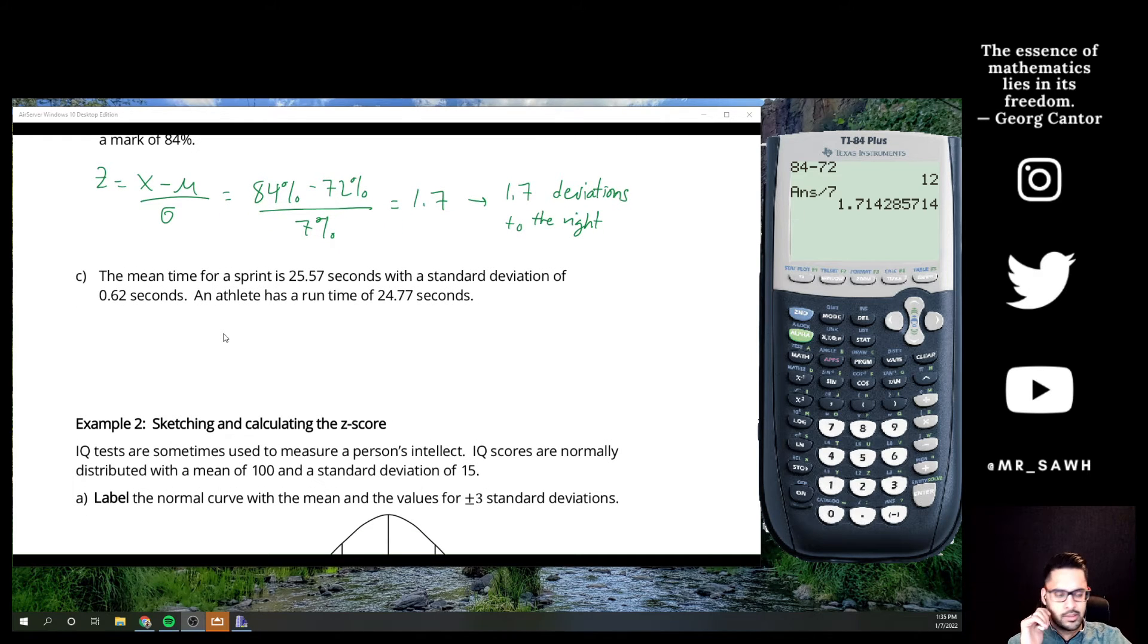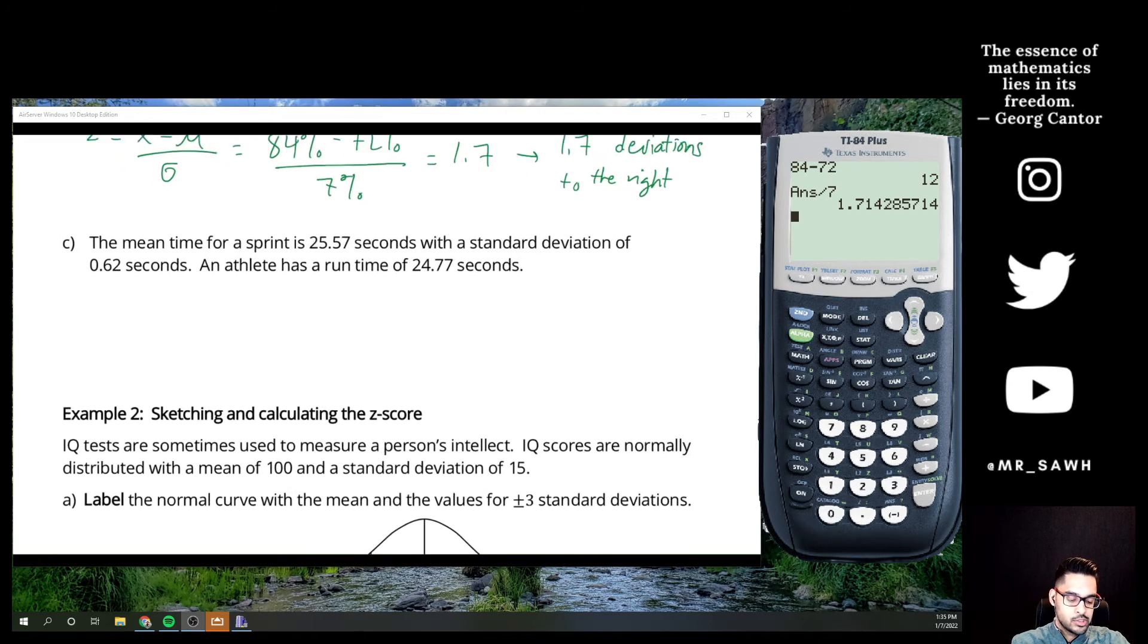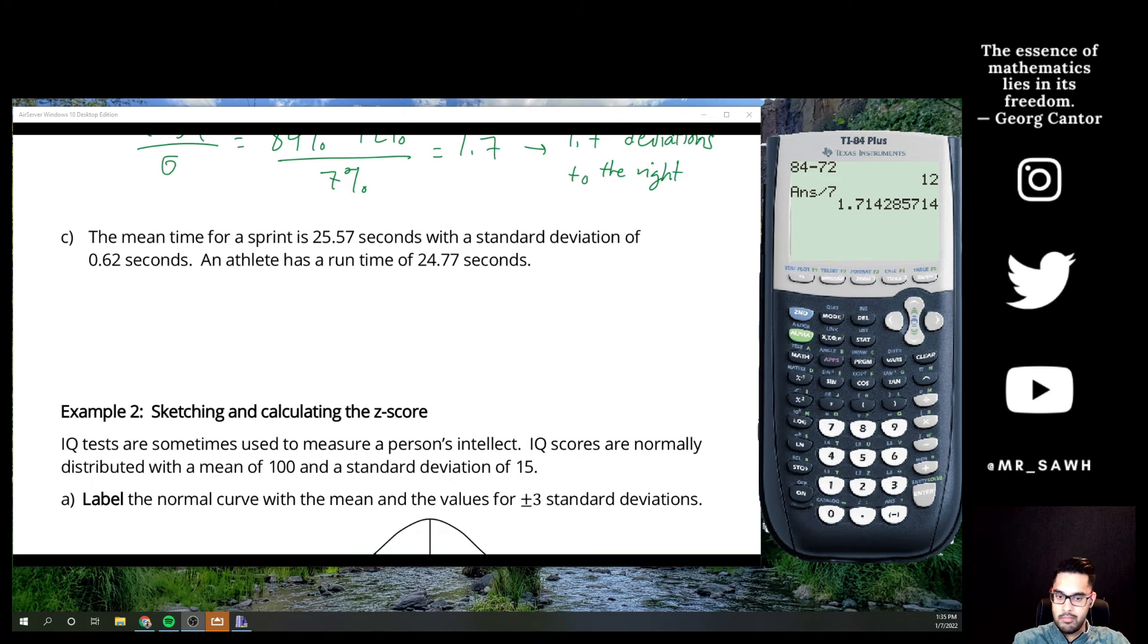Okay, you can think about this in terms of a runner as well. Average time for a sprint is 25.57 seconds, standard deviation of 0.62. The athlete has a run time of 24.77, so we are really just trying to compare their time to the average. Are they better than average, or are they worse than average? Are they slower or faster? Right. So same formula for z-score: specific value minus the average, divide out a standard deviation to really determine their place.